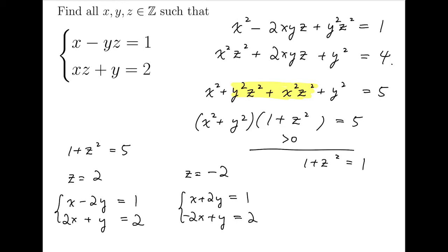Now I shall skip the system of linear equation solving process, and just give you the final answer for these two systems. For the z equals 2 case, we will have x equals 1, and y equals 0.